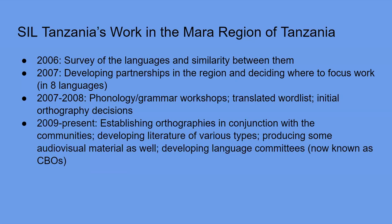We translated a 1700-word list from Swahili into these languages and started making some initial orthography decisions about how to write the languages, working with native speakers of each. From that time forward, we worked to develop the orthographies further in conjunction with the communities. We developed literature of various types — a lot of SIL's focus is on religious literature, but also health literature, traditional stories, and audio-visual material like translating videos into local languages. We also developed language committees, now known as CBOs or community-based organizations.